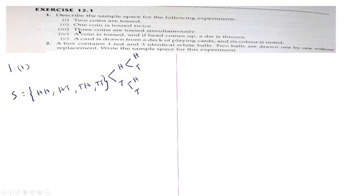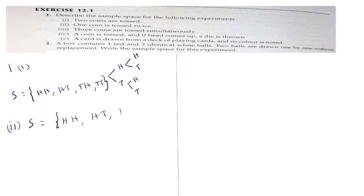The next subdivision: one coin is tossed twice. Again, it is going to be the same thing. Here we have one coin tossed — we will get either head or tail — and then the same coin is tossed again, giving either head or tail. So for the second subdivision also, the sample space is the same: head-head, head-tail, tail-head, and tail-tail.